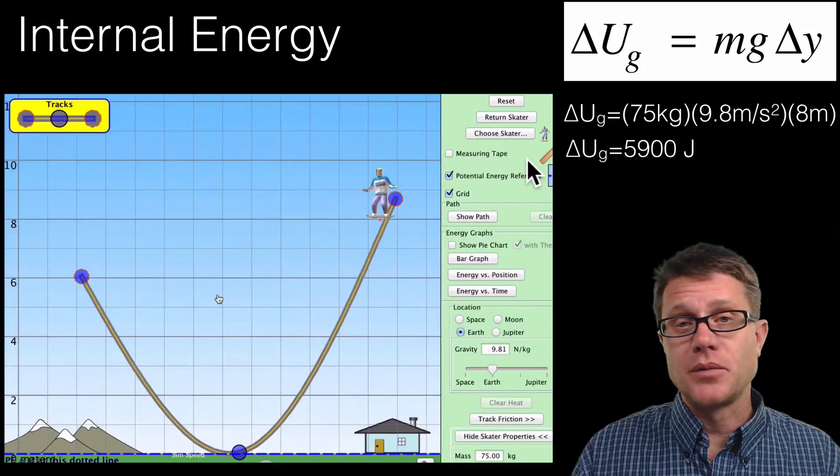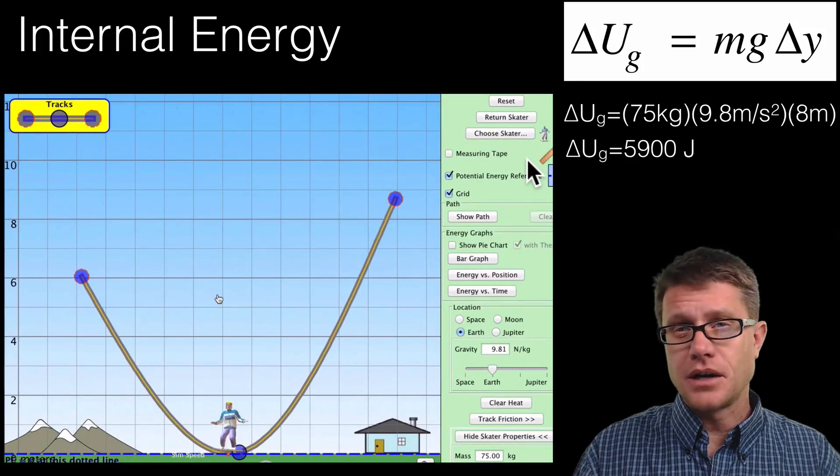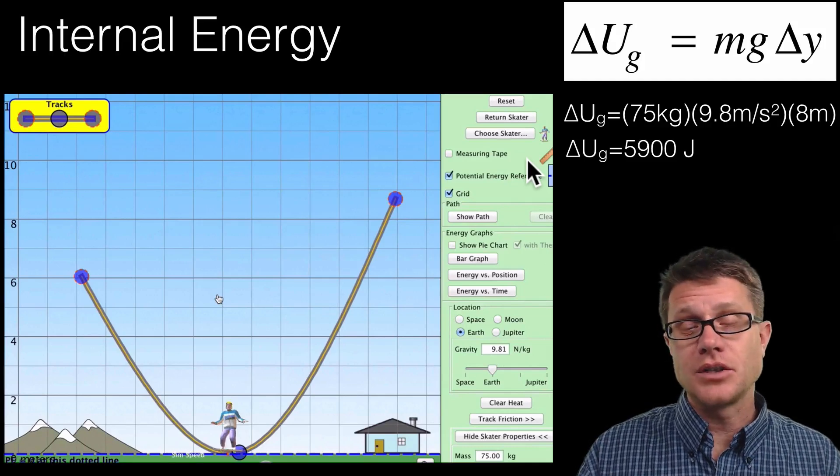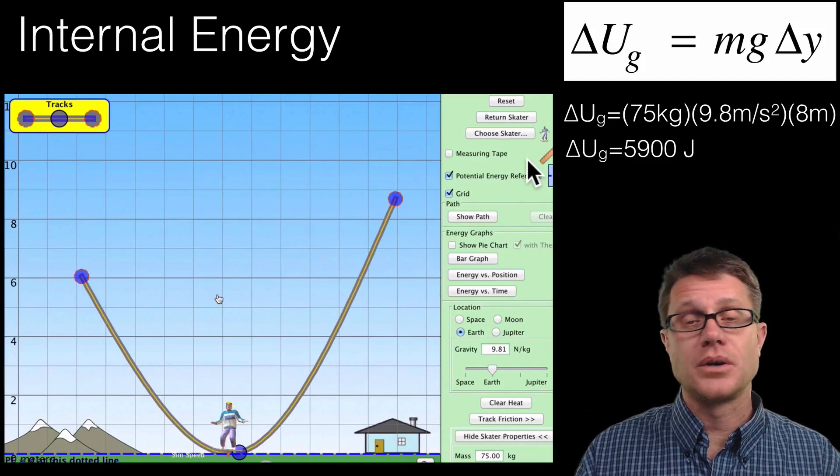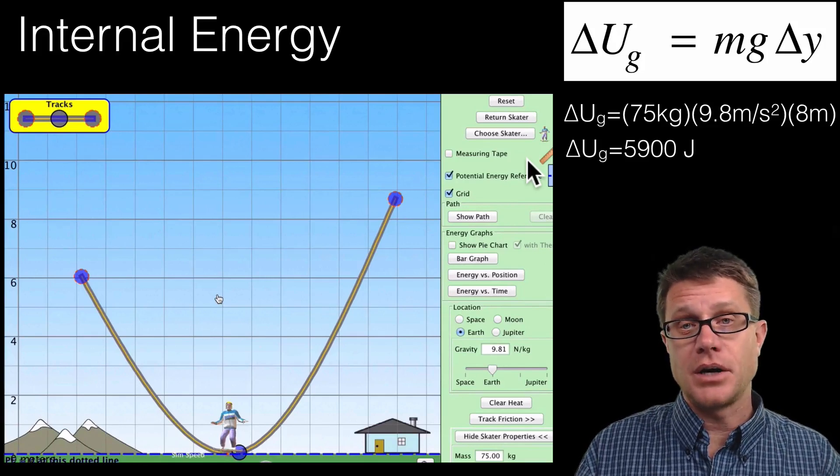A simple problem you could have in AP physics is let us watch this skateboarder go. Where is all the energy now? It is in kinetic energy. Since we knew how much energy was in potential before we could figure out that there is going to be 5900 joules of kinetic energy at the bottom.